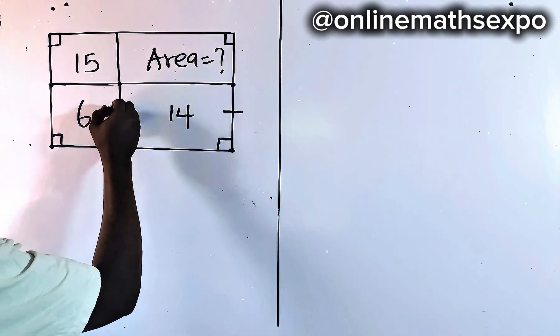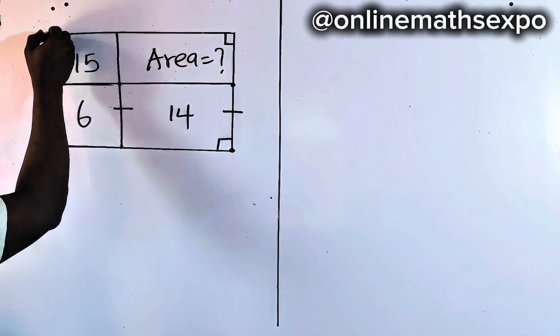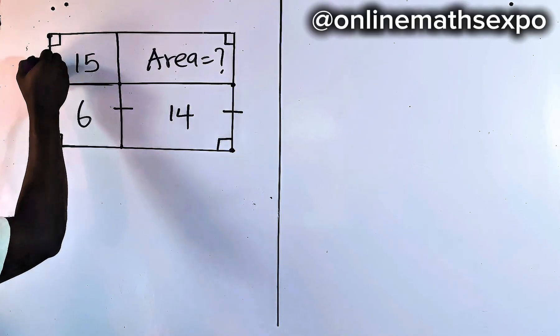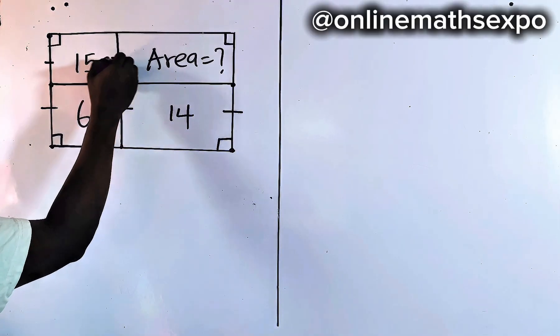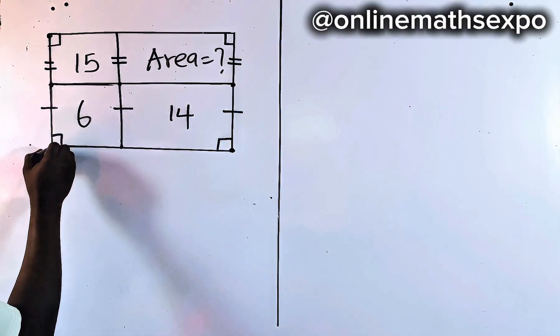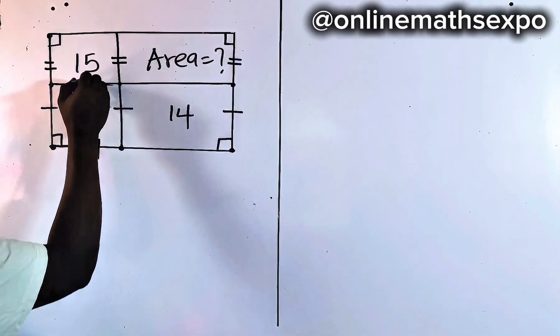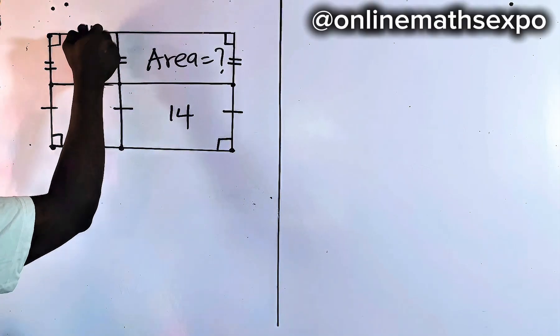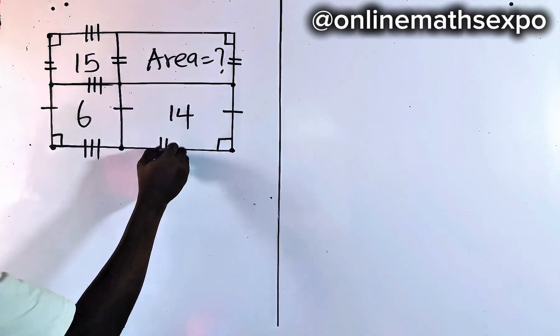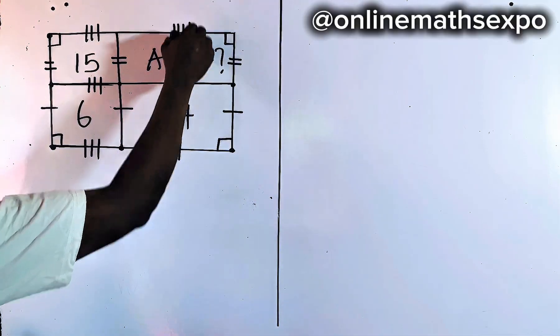Now, whatever be the dimension from here to here should also be the same with this. So let's use two strokes for it. Now, we also know that whatever I have from here to here, we have it as three strokes. It's the same with what you will have in this tree. And whatever I have here, it should also be the same with this.